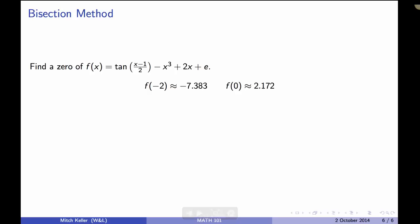So let's take a look at the bisection method for finding zeros or roots of functions. Here's a function, f(x) equals tan((x-1)/2) - x³ + 2x + e. Can we figure out if this would ever be zero? Well, first of all, I just started trying some numbers and if I put in f(-2) and work it out on the calculator, I get about -7.383 and if I put in f(0), I get about 2.172.